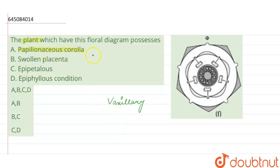Papilionaceous is the vexillary type aestivation, but here in this floral diagram, the type of aestivation given is valvate, in which the petals and the sepals do not overlap each other. So this is wrong.